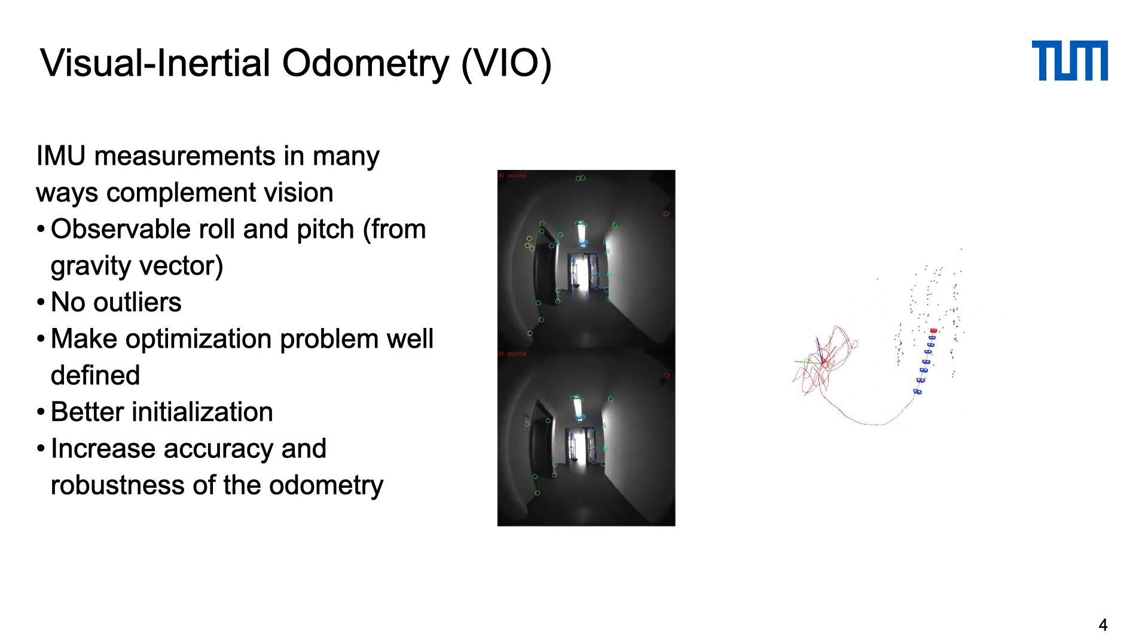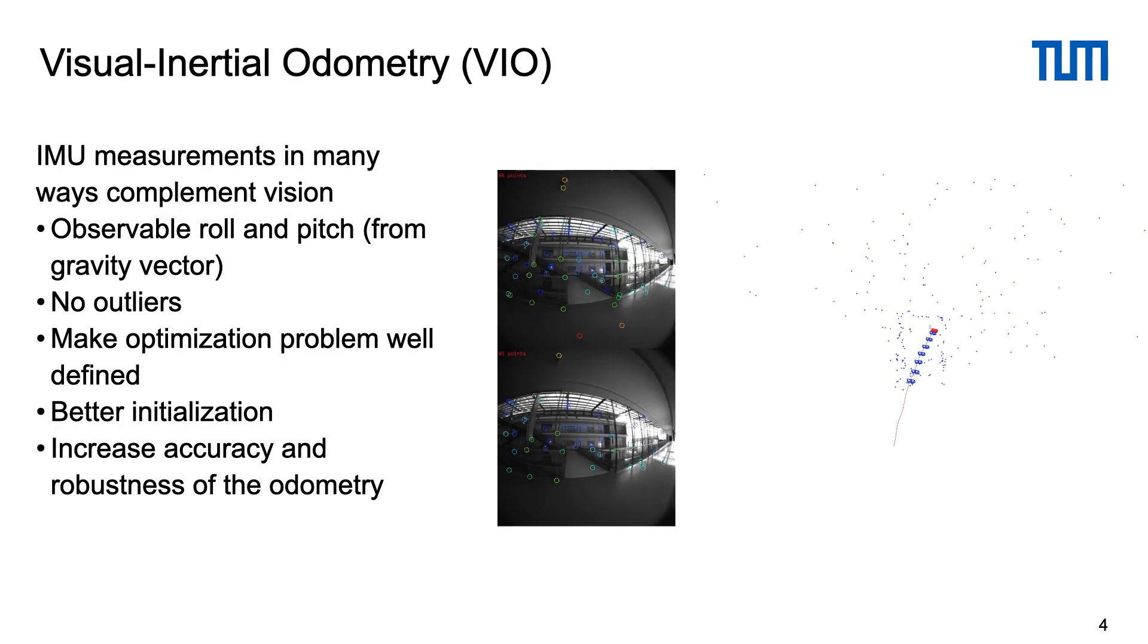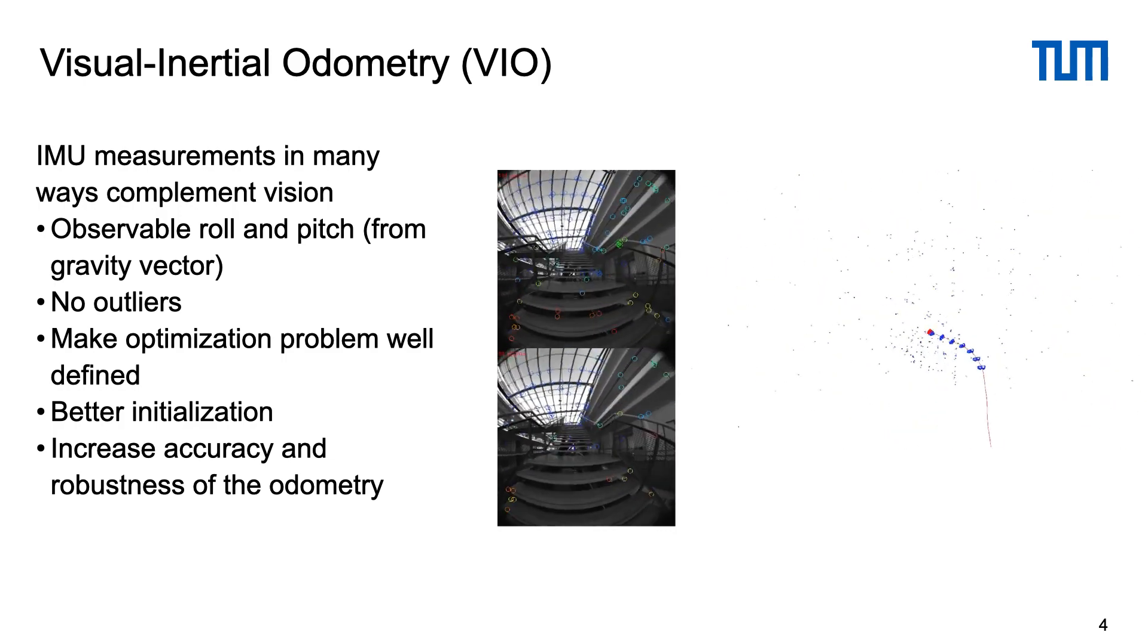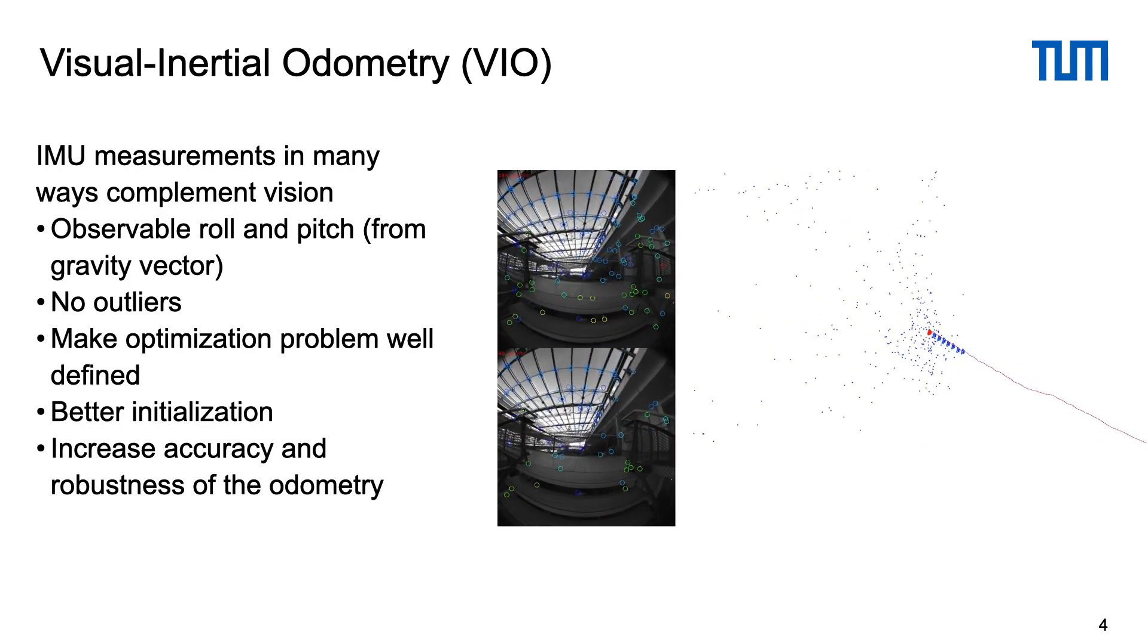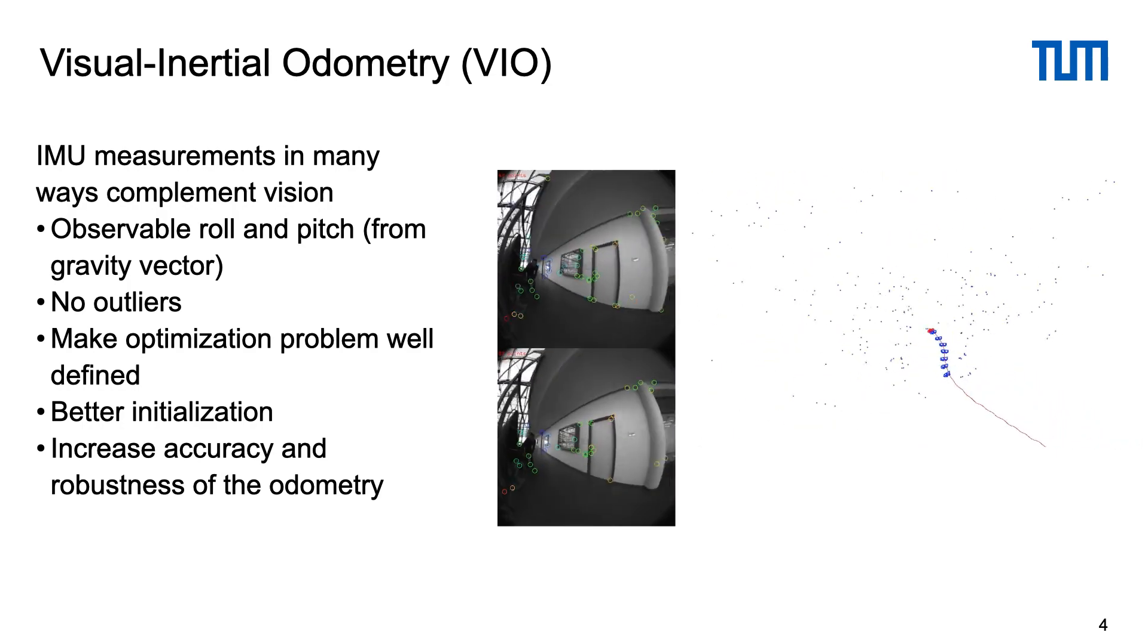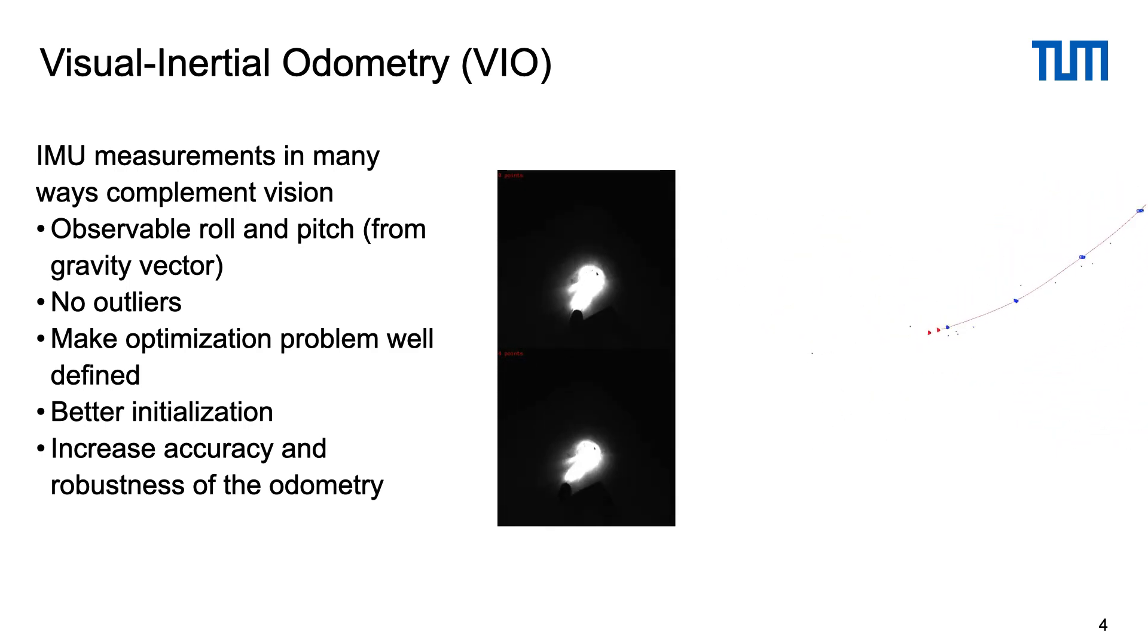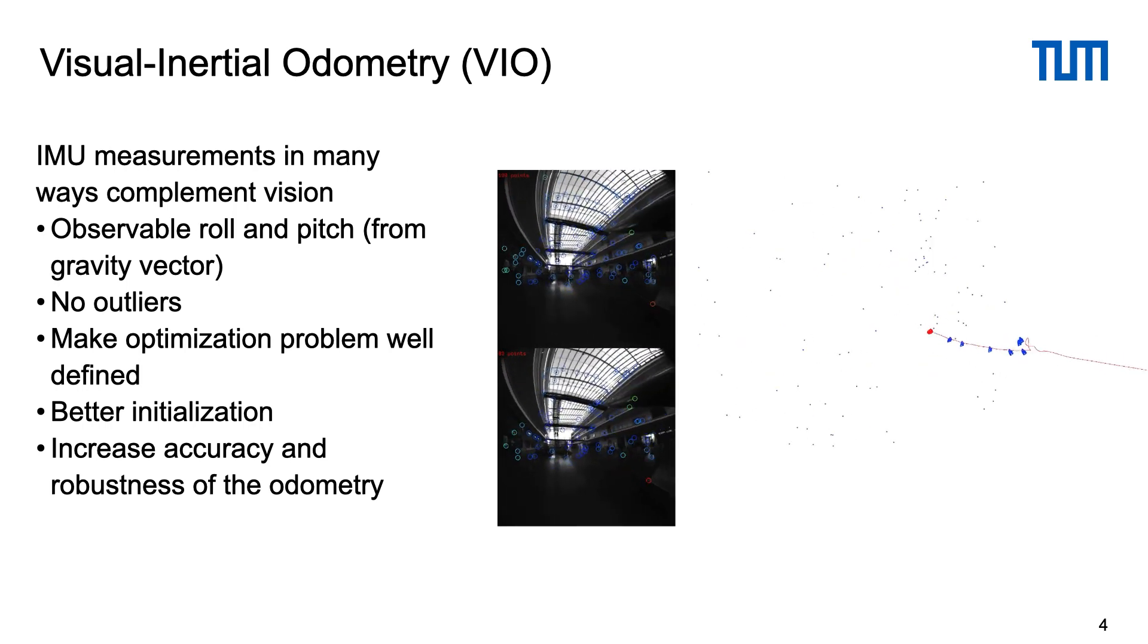Combining camera images with IMU measurements is a popular approach to improve incremental motion tracking, called Visual Inertial Odometry or VIO. IMU measurements complement the images in many ways. They make roll and pitch angles observable from the gravity direction, and unlike vision they have few outliers and make the optimization problem well defined.